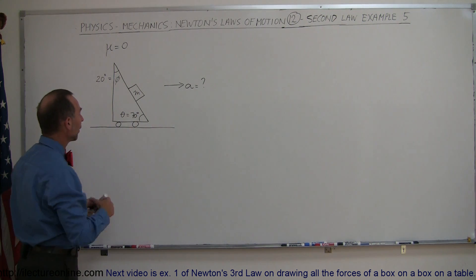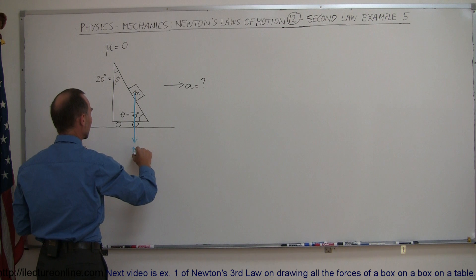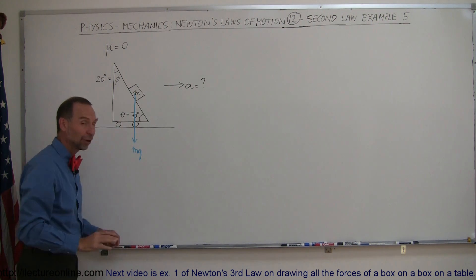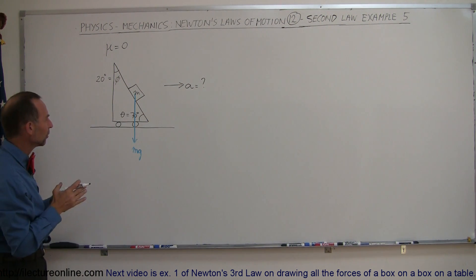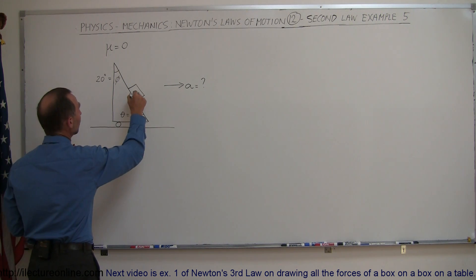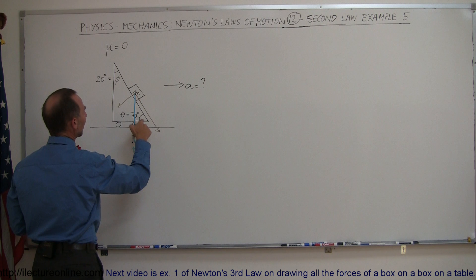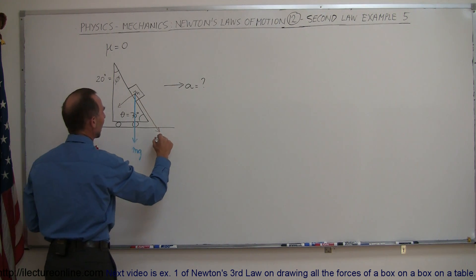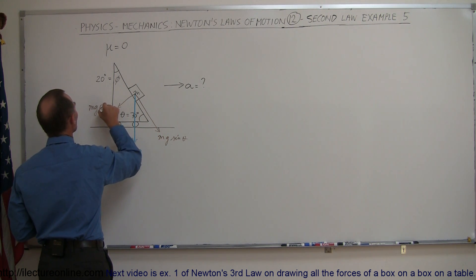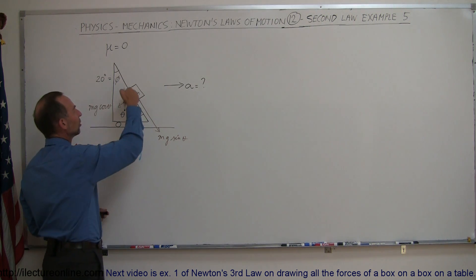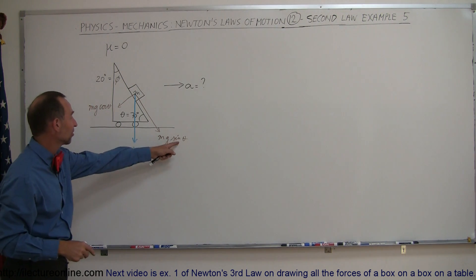The force acting on that block would be the weight of the block — mg acting downward — and that would have perpendicular and parallel components to the incline. This would be the parallel component of the weight, and this would be the perpendicular component. Since this angle is theta, the parallel component is mg·sin(θ) and the perpendicular is mg·cos(θ). So the acceleration along the wedge would be g·sin(θ), or 9.8 m/s² times the sine of 70 degrees.